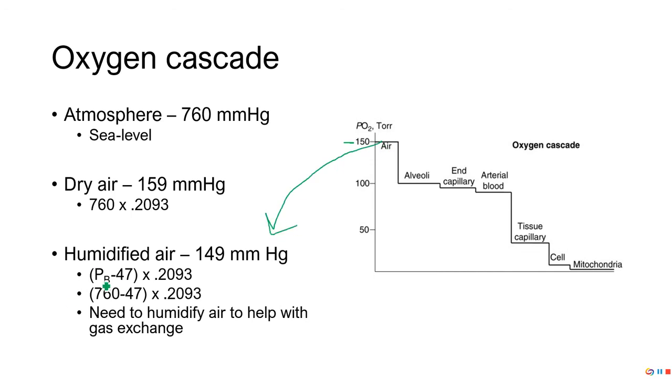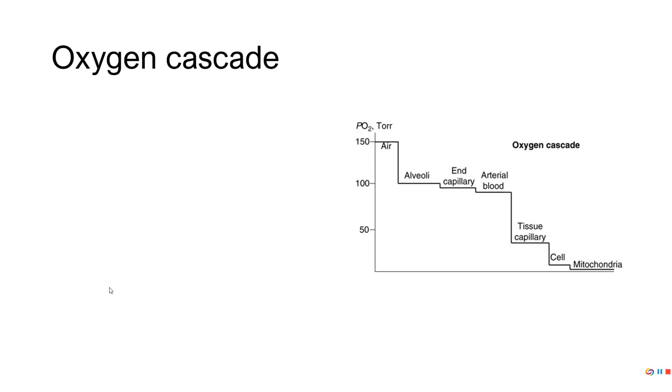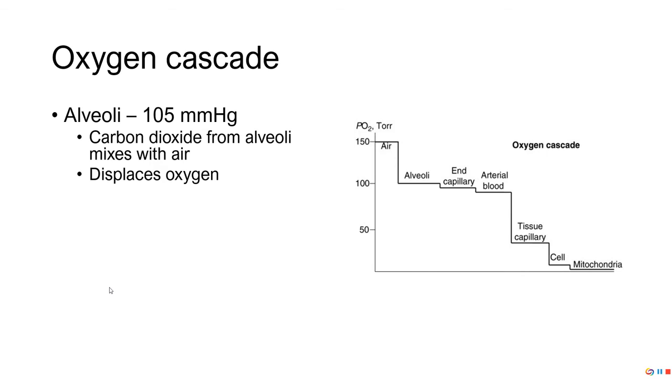We take the barometric pressure, subtract 47 because that's the pressure of water at 37 degrees Celsius, body temperature. Then we multiply that by 0.2093, which gives us about 149. But we're not in our alveoli yet, that's just getting into the airways. So that 149 drops all the way down to 105. The biggest thing that's happening is we're displacing the oxygen in our air and replacing it with CO2.